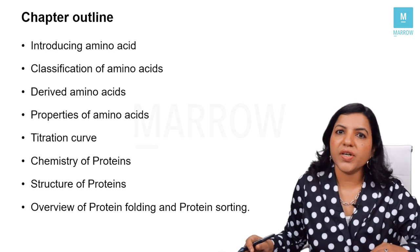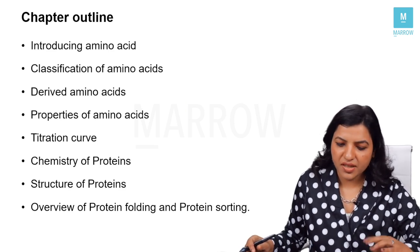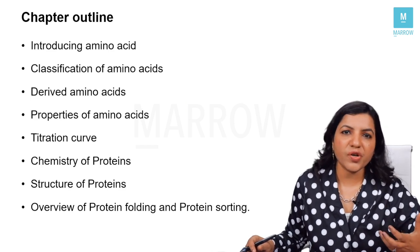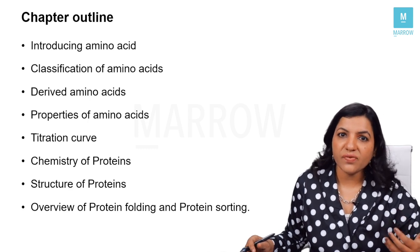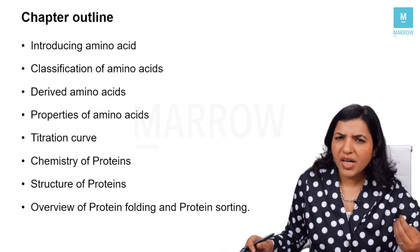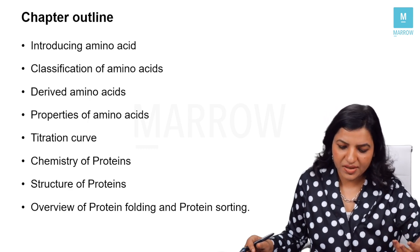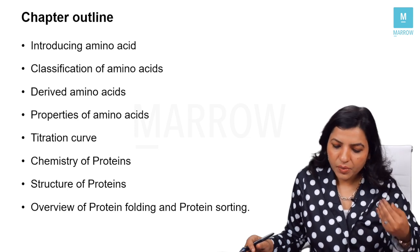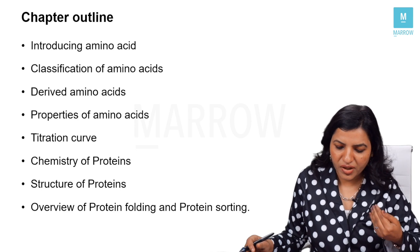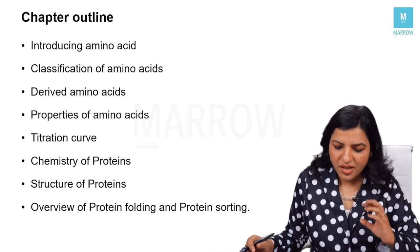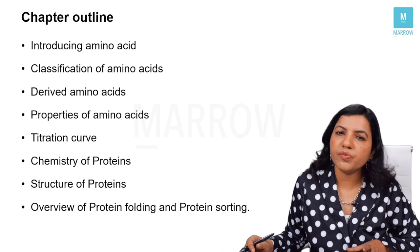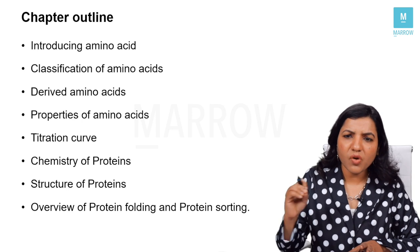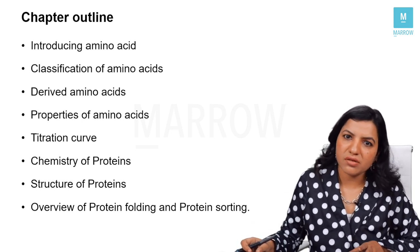The chapter outline that we are going to cover in the chemistry of amino acids is: first, we are going to see what is an amino acid and its concept. Then we will classify amino acids, learn about derived amino acids, and some special amino acids like selenocysteine. Then we learn about the properties, the titration curve, the chemistry of proteins, the structure of proteins, and finally an overview of protein folding and protein sorting.